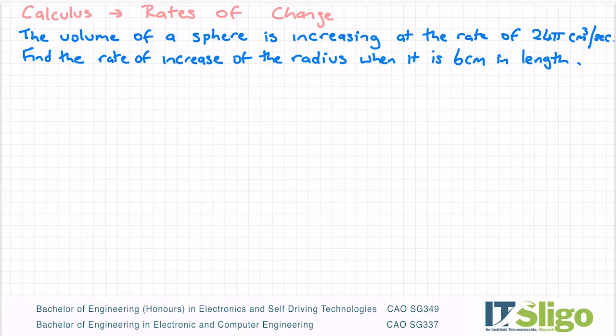There are a couple of little tricks to rates of change questions. The first and most important one is that when it says something is increasing at a rate, and it doesn't say with respect to the radius or anything else, it just says the volume is increasing at a rate, that means that is dV/dt. This is the volume of the sphere, and this is the rate at which it's increasing.